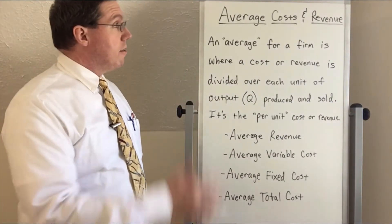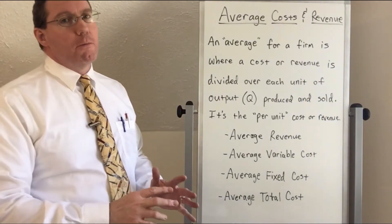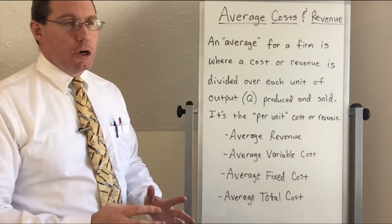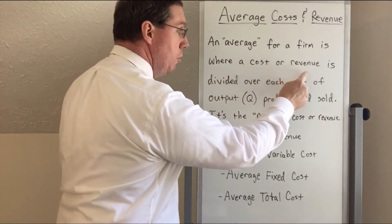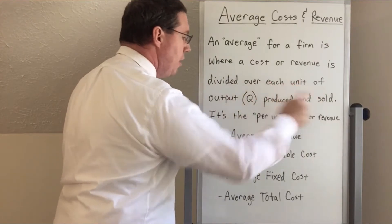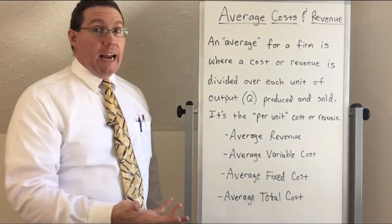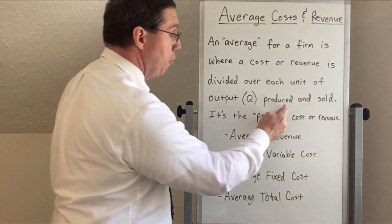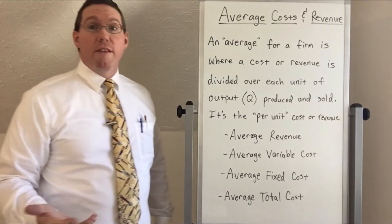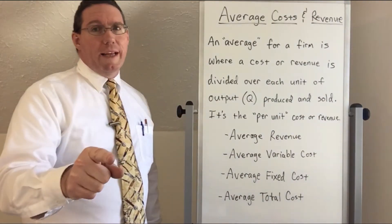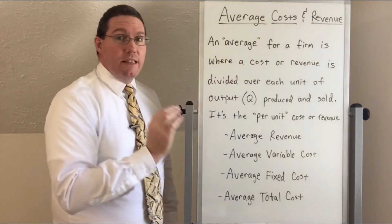What we're going to talk about here is average costs and revenues. What is an average for a firm? Whenever a firm talks about an average financial measure, it's talking about a cost or revenue divided over each unit of output — that means quantity. So basically, all you're doing for an average is dividing a number by quantity. It is the per unit cost or revenue. Per unit and average mean the exact same thing.